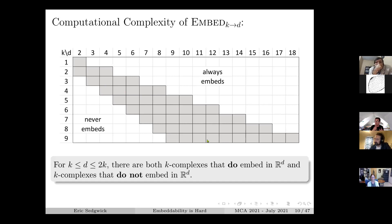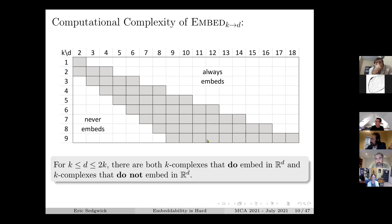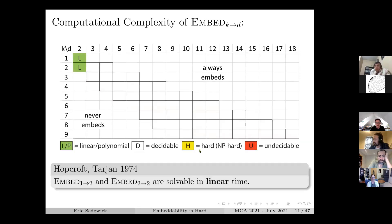If the codimension is large enough - if you double the dimension and add one - then you will always be able to embed it, so everything over here always embeds. From a computational perspective these are not very interesting. The gray region is where the problem is interesting, and within that gray area there are both complexes that do embed and those that don't embed.